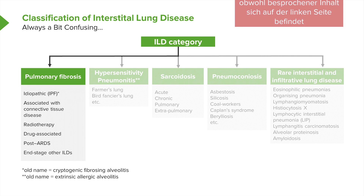Pulmonary fibrosis has several different causes. It could be idiopathic, which is the commonest cause and means that we don't know what's causing it. Or it can be associated with connective tissue disease such as rheumatoid arthritis or dermatomyositis. In addition, there are a range of other situations where pulmonary fibrosis develops, such as radiotherapy, drug associations, and various drugs after adult respiratory distress syndrome.